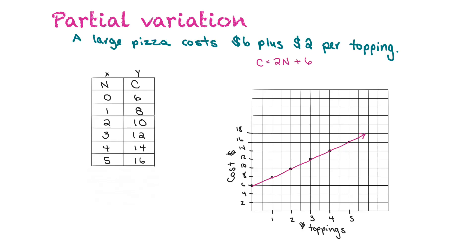The cost equals 2n plus 6. The plus 6 is our initial value — the base cost. If we plug in zero toppings: two times zero is zero, plus six equals six dollars. Then if we want to find the cost for eight toppings: two times eight plus six equals twenty-two dollars. This relationship is an example of partial variation.